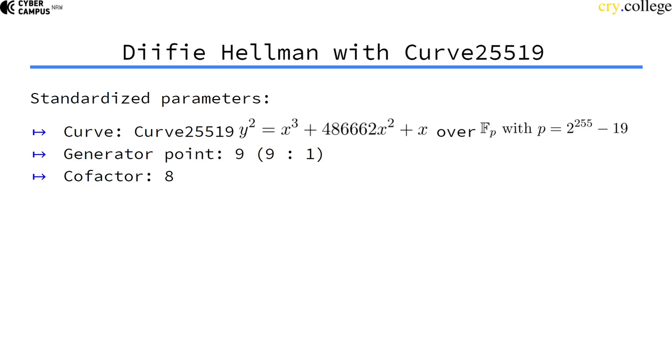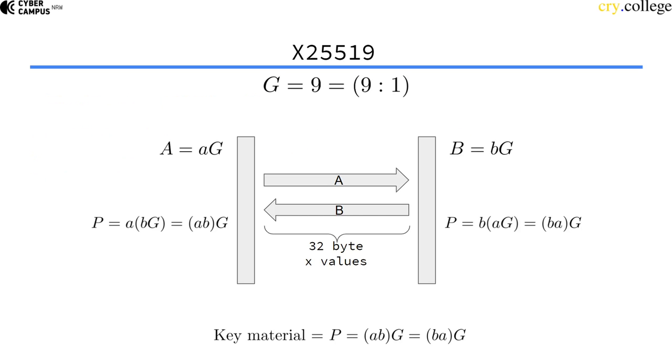The Z value is 1 and the cofactor in this case is 8 because if you remember all Montgomery curves have a cofactor of at least 8. So in X25519, we do a normal elliptic curve Diffie-Hellman key exchange.